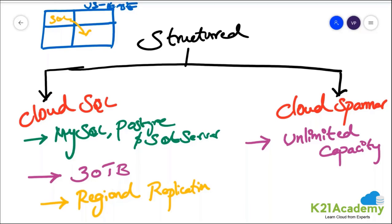When you talk about replication in Cloud Spanner, the replication is always global replication. What is global replication? You can replicate it to other geographical locations, so if one region fails, another region is available. Cloud Spanner also supports the same database flavors that Cloud SQL supports.